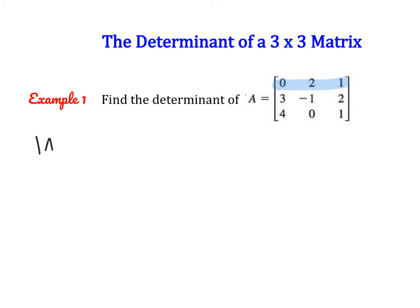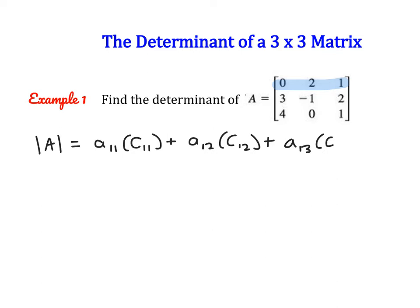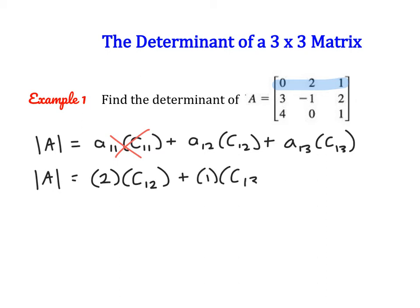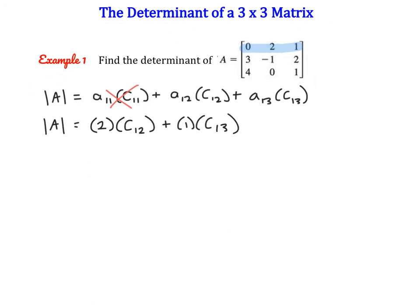The determinant of matrix A is just going to be: element (1,1) times the cofactor of (1,1), plus element (1,2) times the cofactor of (1,2), plus element (1,3) times the cofactor of (1,3). We know that element (1,1) is 0, so that term disappears. What we have left is element (1,2), which is 2, times its cofactor, plus element (1,3), which is 1, times its cofactor. So now let's find those cofactors.